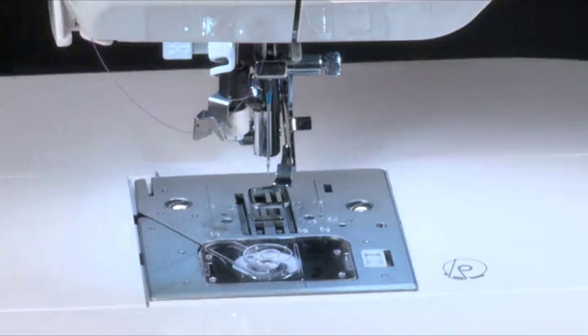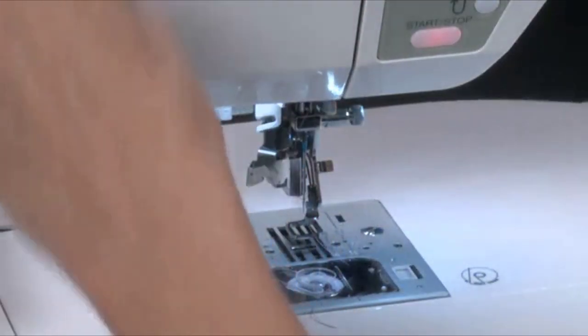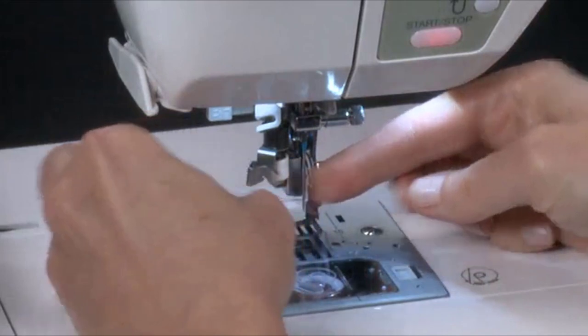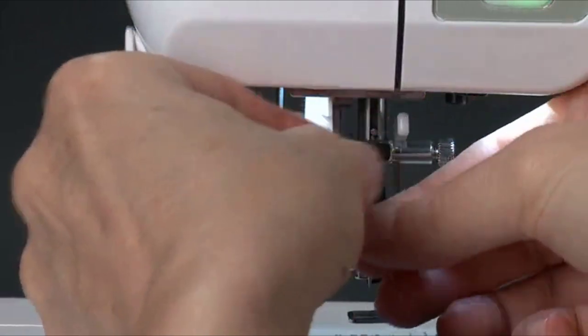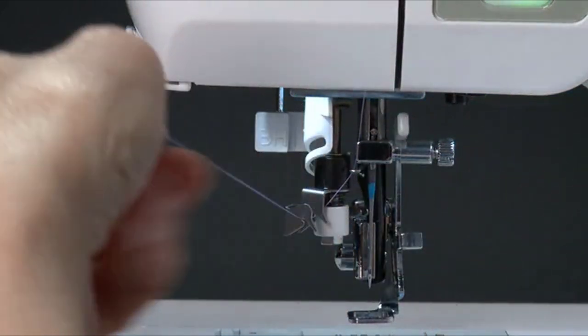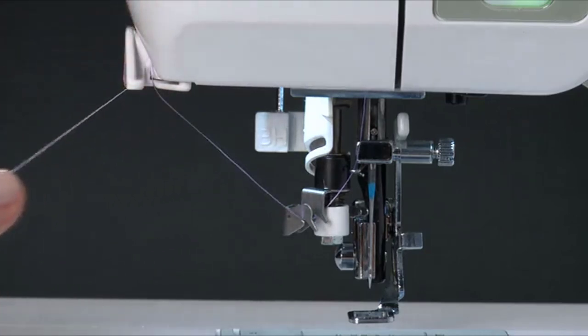Your machine features a built-in needle threader to help you thread the needle quickly and effortlessly. Here's how it works. Hold the thread tail in your left hand and guide it into the twin thread guide on the threading mechanism. Then bring it up and over the thread holder at the side of the machine.